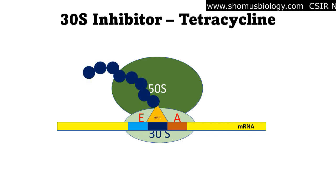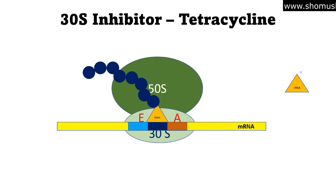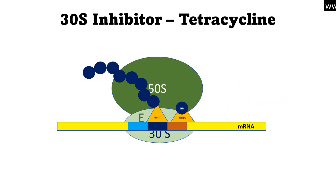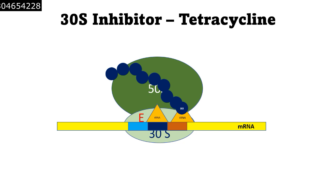The ribosome has 30s and 50s subunits containing E, P, and A sites. The tRNA carries the growing polypeptide chain, represented by blue dots where each dot represents a single amino acid, attached to the P site. A charged tRNA carrying a new amino acid will bring it to the A site, where peptidyl transfer activity occurs and the polypeptide chain is extended. This is how elongation of protein synthesis works.